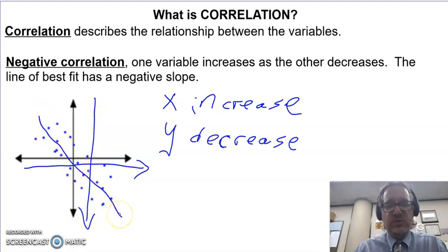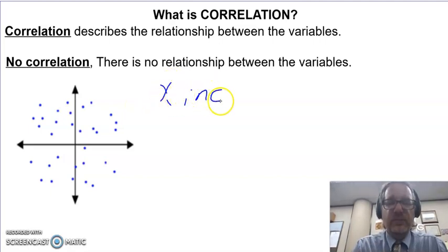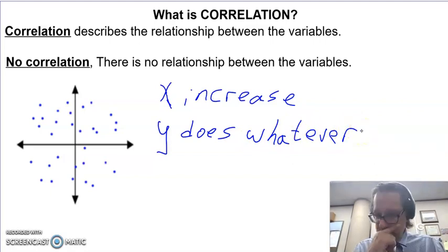No correlation means X does not control Y. There is no relationship between our two variables. X will increase, Y does whatever. So my X value will increase, Y does, I don't know, whatever. It just is. There is no direct correlation between the two. X does not control Y.